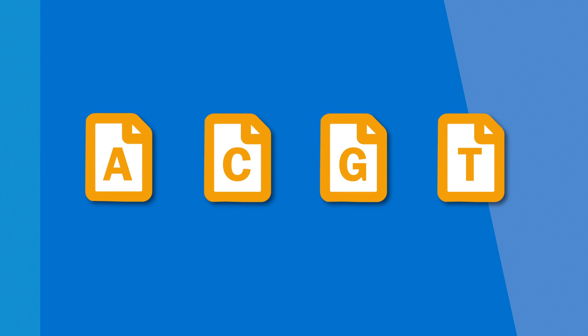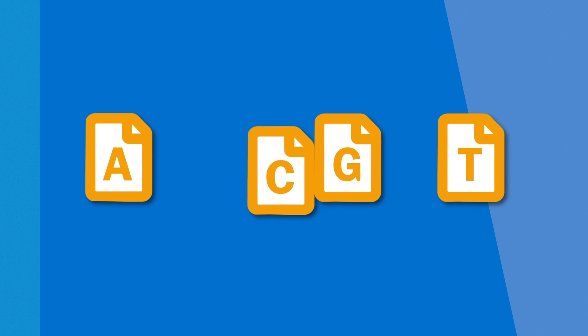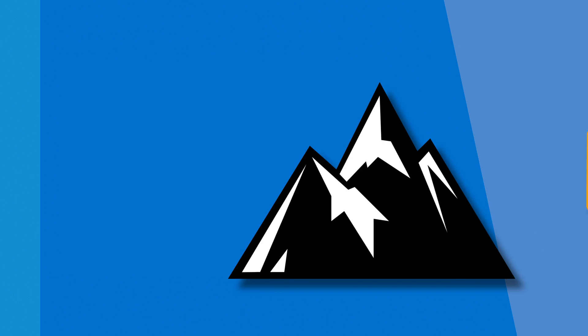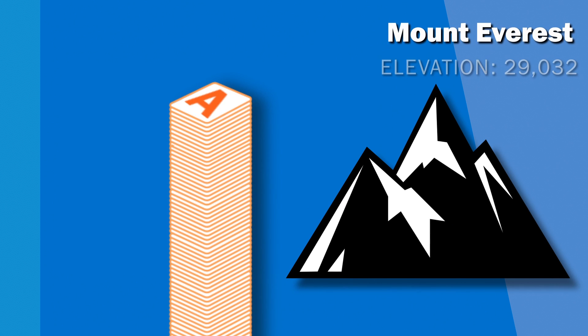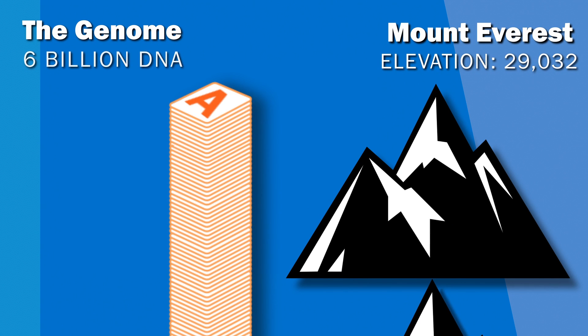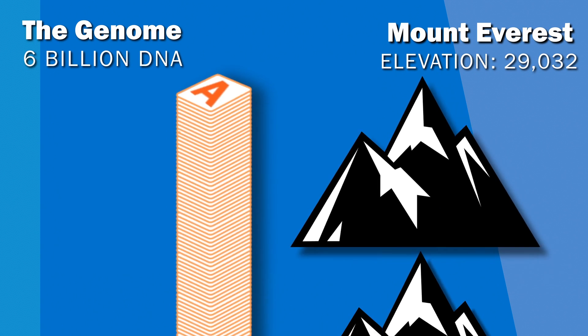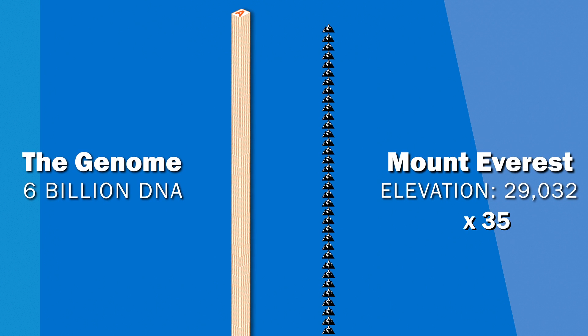To get some perspective of just how remarkably vast the genome is, think of it this way. If you printed out each block of DNA on a separate sheet of paper and stacked them on top of each other, that stack of paper would not only be taller than Mount Everest, but it'd be as tall as 35 Mount Everests stacked on top of each other. Yeah, the genome is a big place.